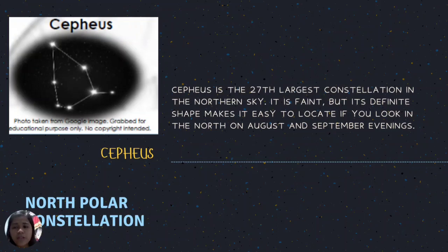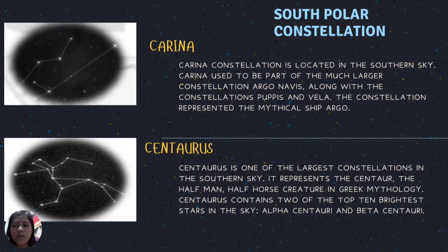Some north polar constellations include Cassiopeia, Cepheus, Ursa Major, and Ursa Minor. Cepheus is the 27th largest constellation in the northern sky. It is faint but its definite shape makes it easy to locate if you look north on August and September evenings.